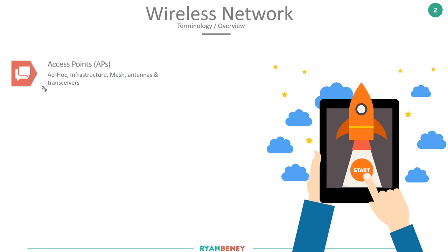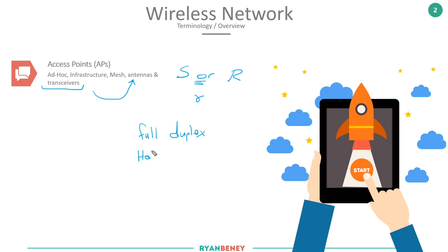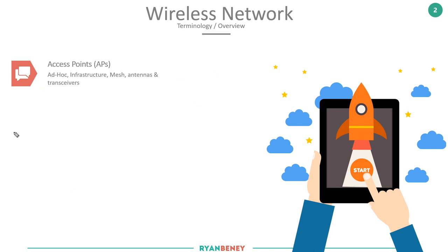Transceivers power the antennas and give them the ability to send or receive data. The key word here is 'or' not 'and' — 'and' would imply full duplex, but 'or' implies half duplex. Wi-Fi works at half duplex, so transceivers allow us to send or receive data, but not at the same time.